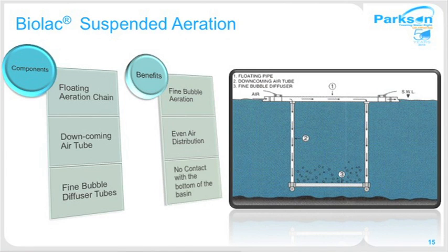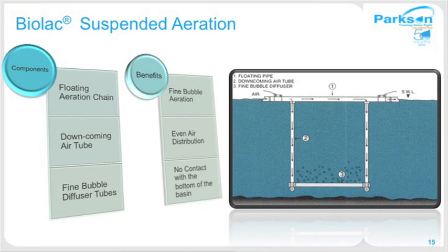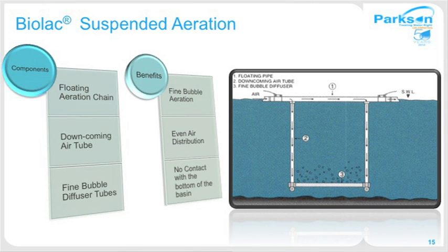The backbone of the BioLac system is the chain assemblies and the biofusers. Air from the blowers flows through the floating aeration chain on the surface — that's the first component. The airflow then goes through two downcomers down to the biofusers, which release air as fine bubble aeration into the liquid. The BioLac aeration distributes air evenly throughout the basin. The main difference versus conventional fine bubble aeration is that it's not attached to the bottom of the basin — it floats freely about a foot above the basin floor.